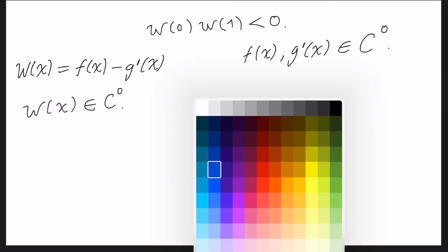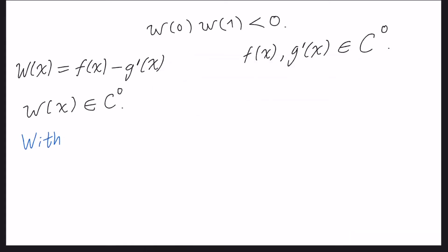This is the point. We will suppose, remember this, without loss of generality, we will suppose that w(0) must be bigger than 0, which implies that w(1) is less than 0. I say without loss of generality because if we have the other condition, that w(0) is less than 0, we will have the same result that we will show next.